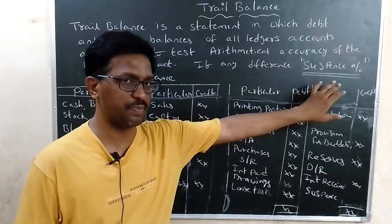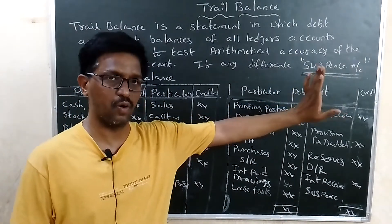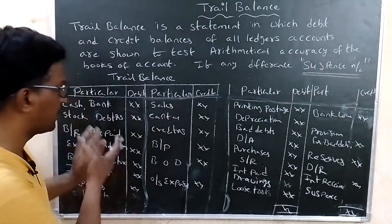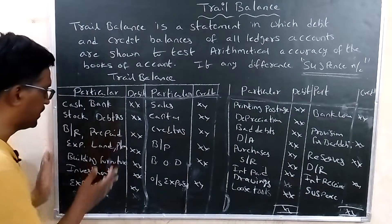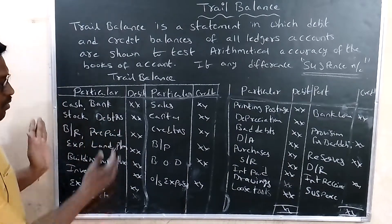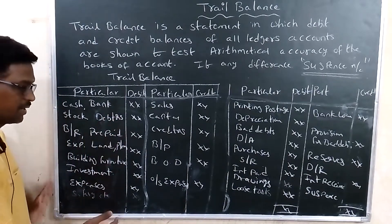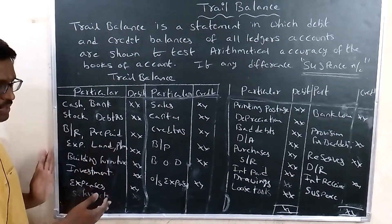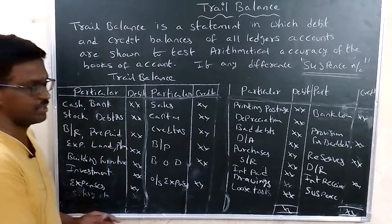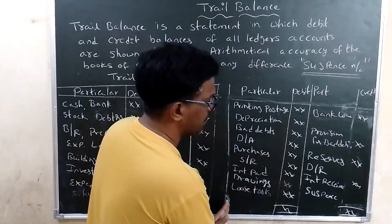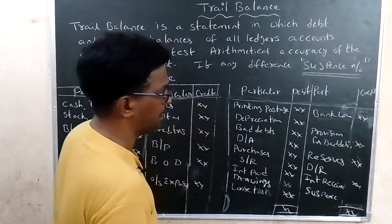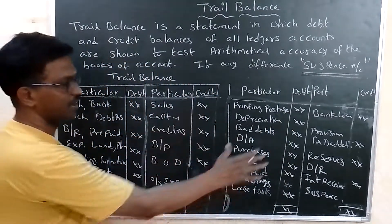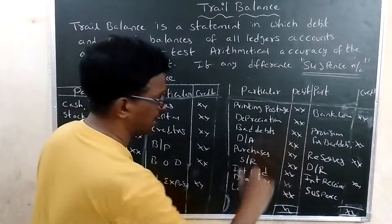If there is any difference in your trial balance, it is treated as a suspense account. Now let us look at what items come under the debit side and what items come under the credit side of the trial balance.